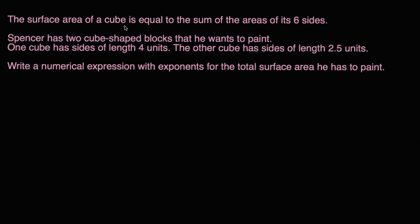So this first one says the surface area of a cube is equal to the sum of the areas of its six sides. And that makes sense.